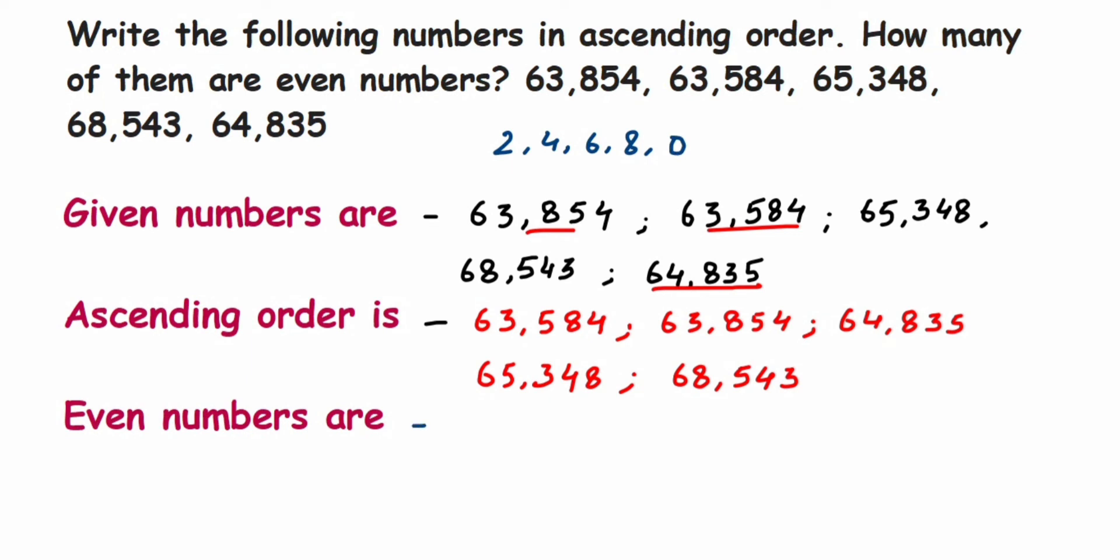Here the even numbers will be the first number—you can see it's ending with 4—so this will be 63,854. The next number is again ending with 4, so this is 63,584.